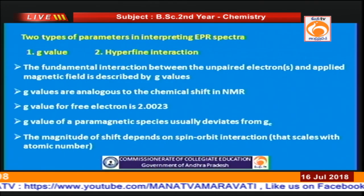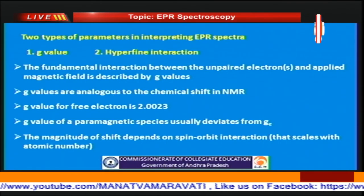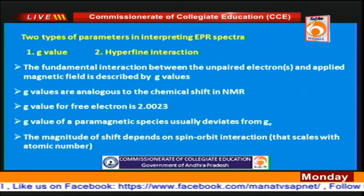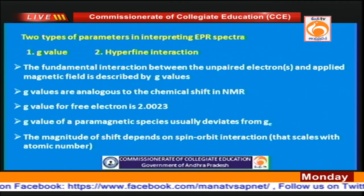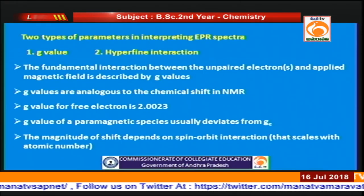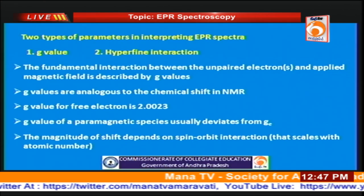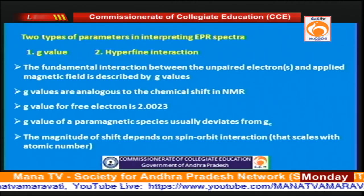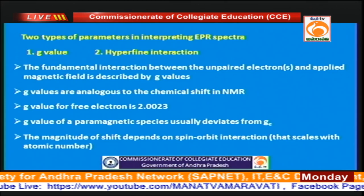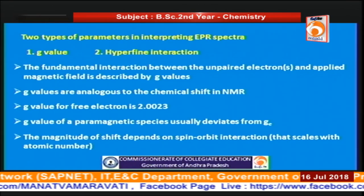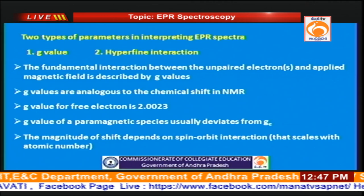Like NMR, there are two important parameters in EPR. In NMR the two important parameters are chemical shift δ and coupling constant J. The analogous parameters in EPR are the G value and hyperfine interaction. The G value indicates the interaction between the unpaired electron and the applied magnetic field B₀, and G values are analogous to chemical shift values. The G value for a free electron is 2.0023.